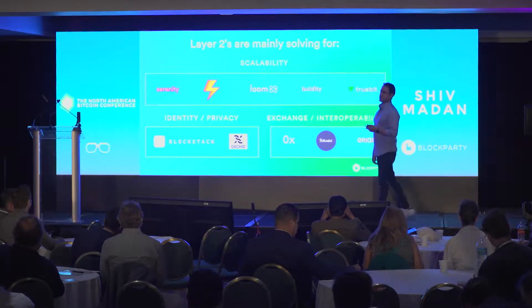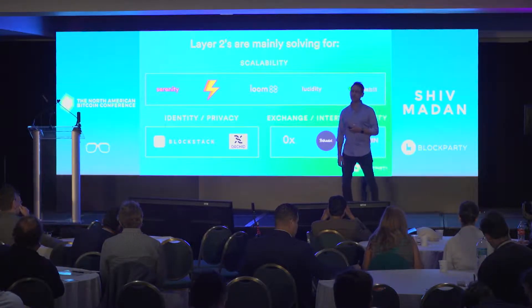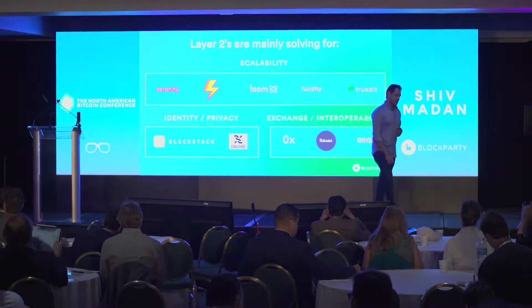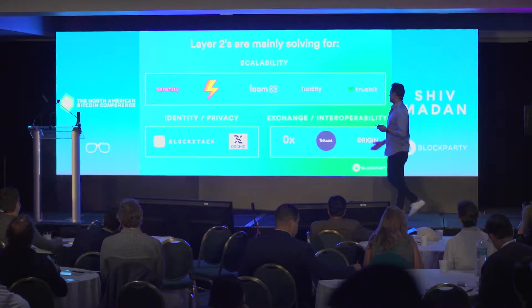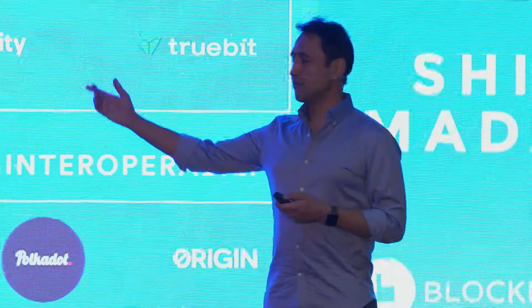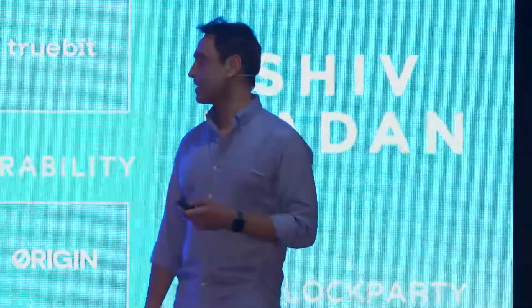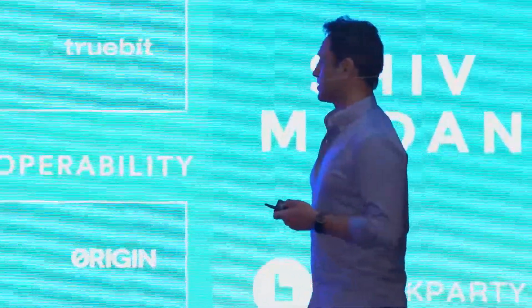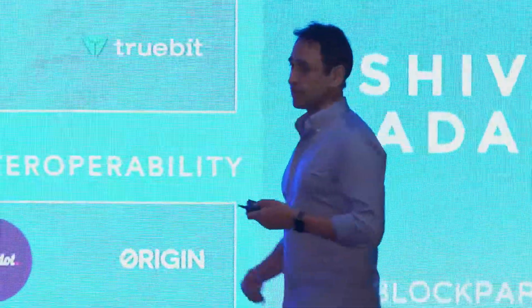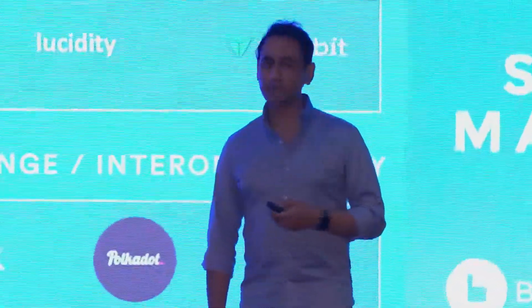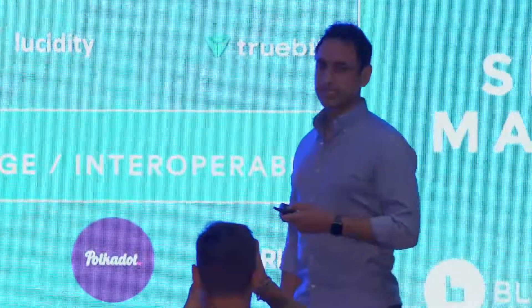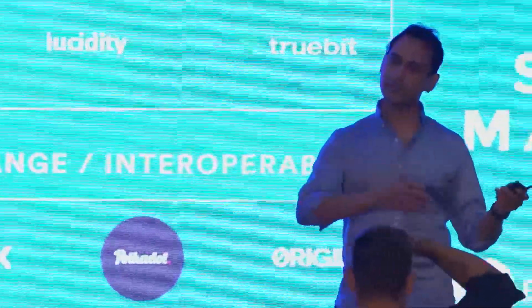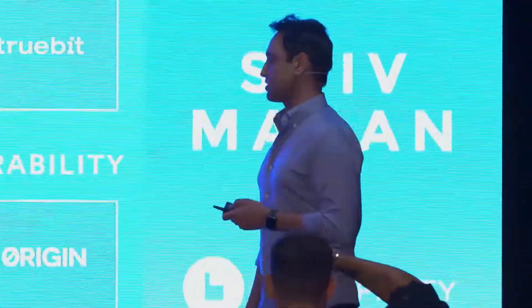There are a whole bunch of new layer two protocols working on building that capability: scalability, identity, interoperability. The most well-known is Lightning Network. There are a lot of other good ones — Loom has been working hard on game-related scalability, and 0x on decentralized exchange for simple assets, now also moving into non-fungible tokens.